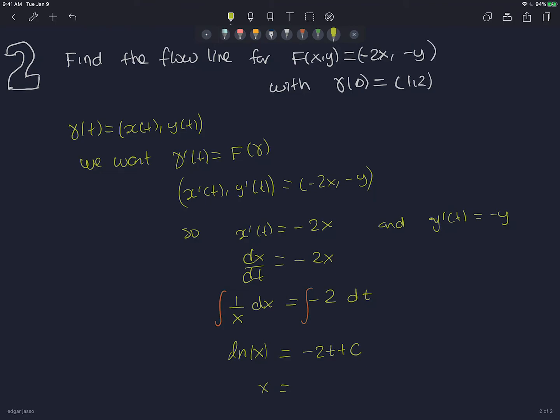So now when you integrate this side with respect to x and this side with respect to t, you end up having ln|x| = -2t + c₁. So now to solve for x, I take the exponential of both sides. So x would be e^(-2t + c₁). But then we write this like e^(-2t) times e^(c₁). So we call that k·e^(-2t).